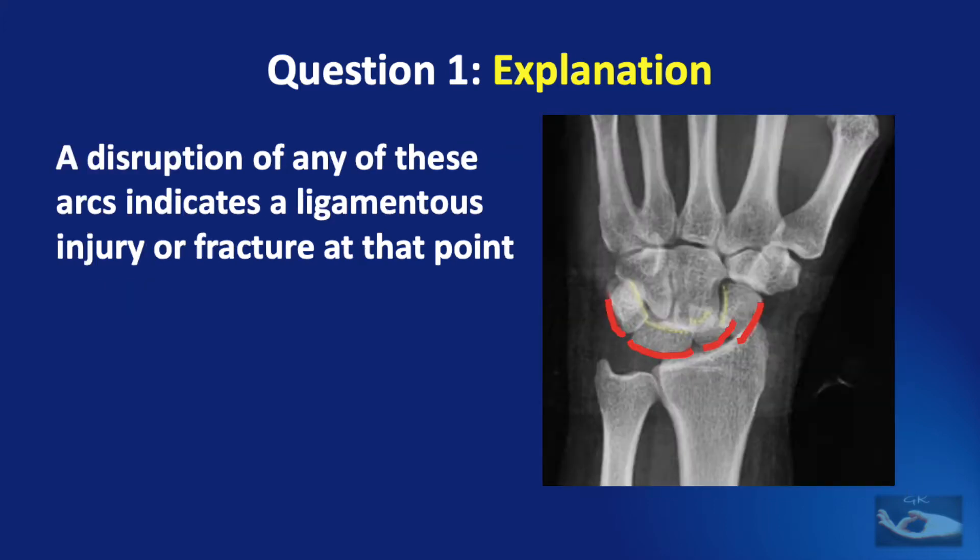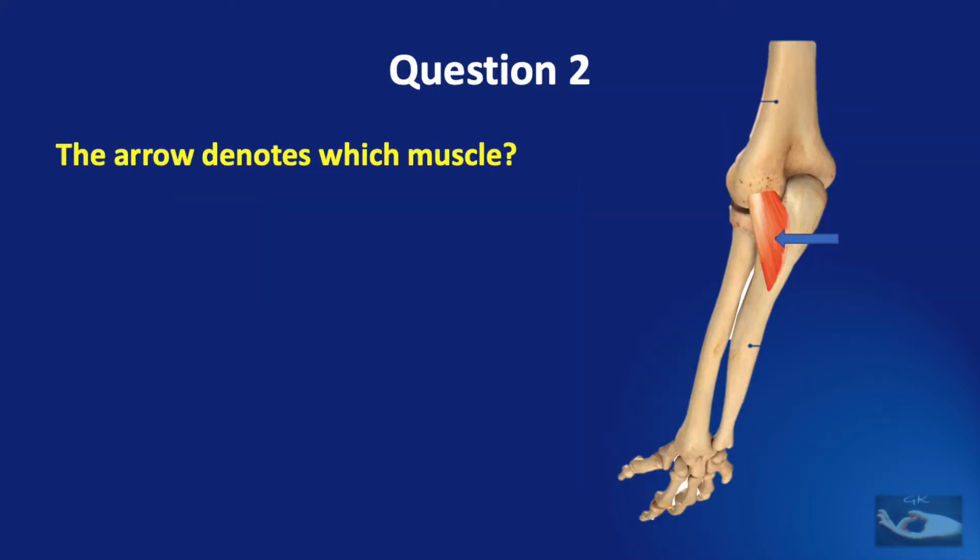A disruption of any of these arcs indicates a ligamentous injury or a fracture at that point, as shown in this example of a fracture of the scaphoid bone.